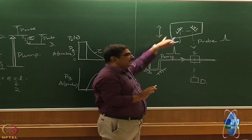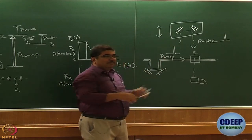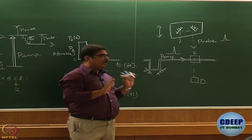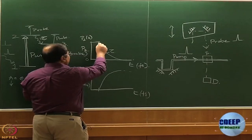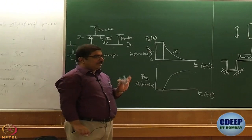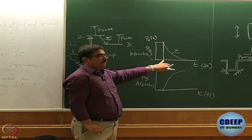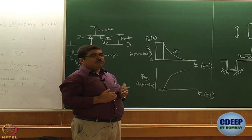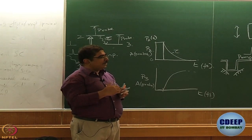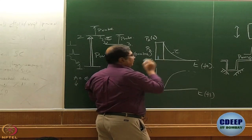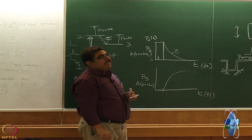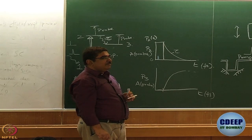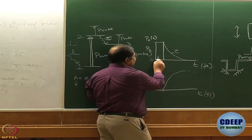If the path length of the probe is smaller than the pump, the probe will arrive at the sample earlier than the pump. At that time there is no excited state population, so absorbance will be zero. Think of it this way: the pump is fixed and the probe is moving. Time 0 is when the pump arrives at the sample. If the probe arrives before the pump, there is no population, and absorbance is zero.